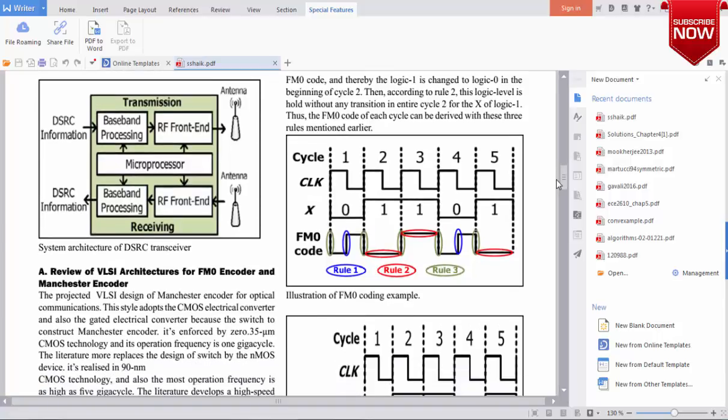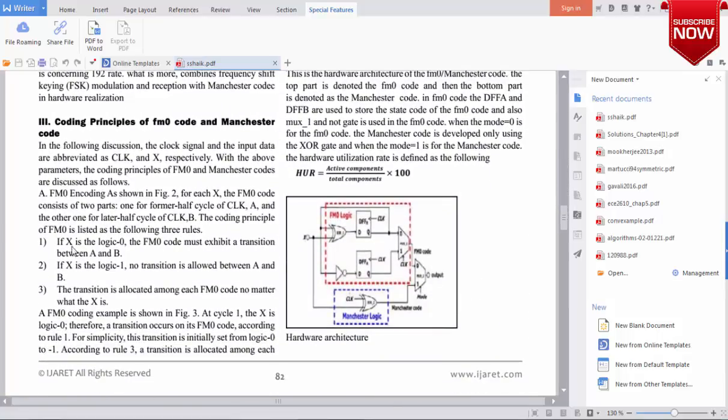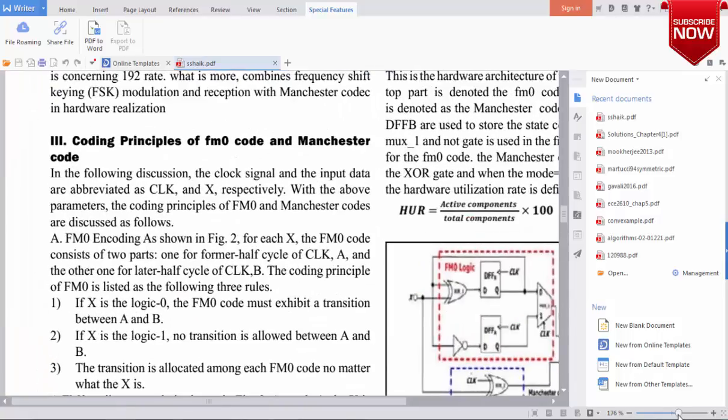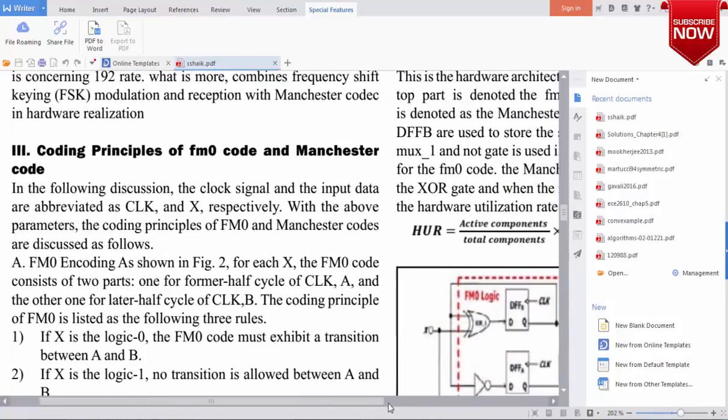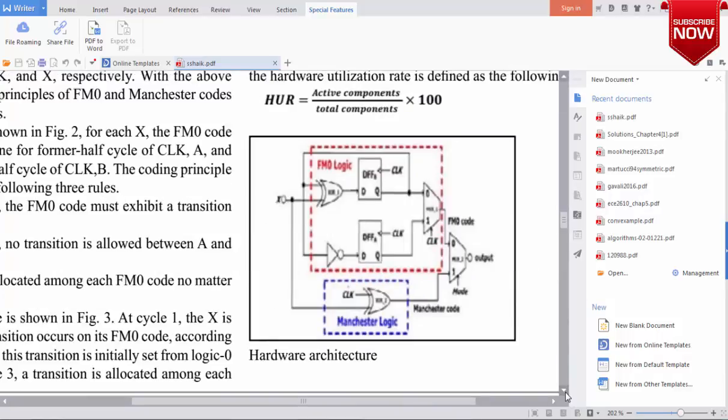These are some basic principles of Manchester encoding. As usual, you can see the paper which I have taken. This is not an IEEE paper. This is an IJARET paper. You can search about it to find what this paper is and what is the importance.